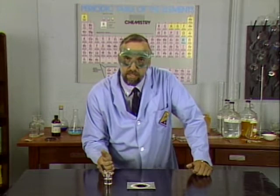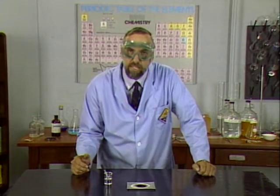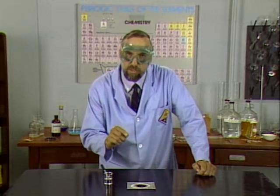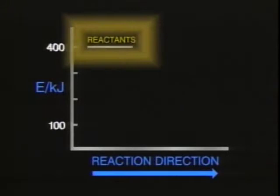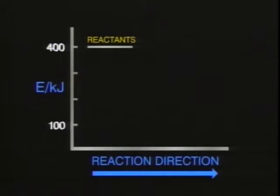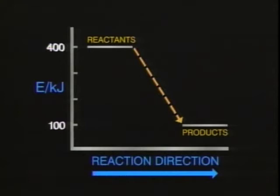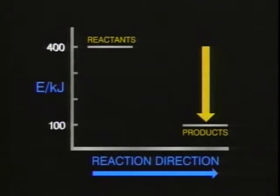The key word is release. This is the type of reaction we call exothermic. In an exothermic reaction, the reactants have relatively high energy — depicted here in kilojoules. The products of the reaction have a lower energy. As the reaction proceeds downhill from high energy to low energy, reactants are converted to products, and energy is released by the system — in this case, 300 kilojoules per mole reactant. Most chemical reactions tend to release energy, usually in the form of heat.